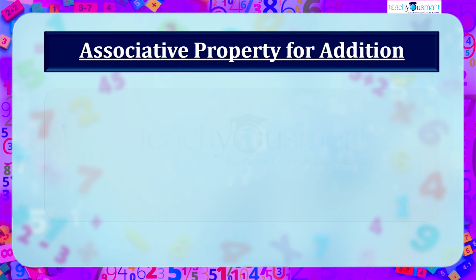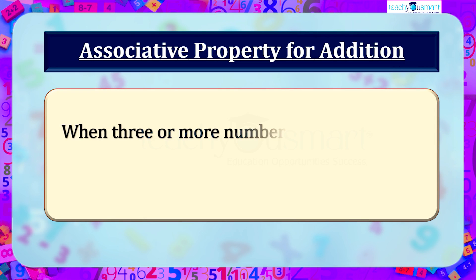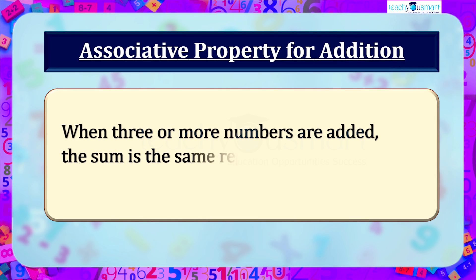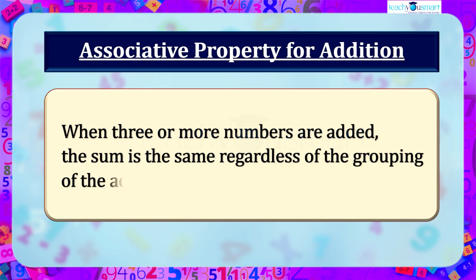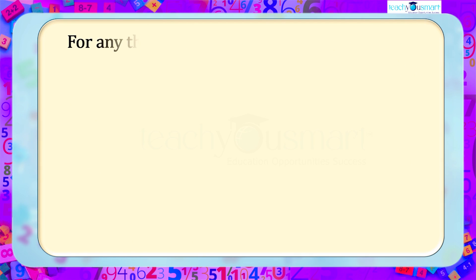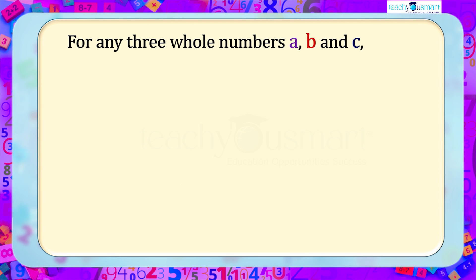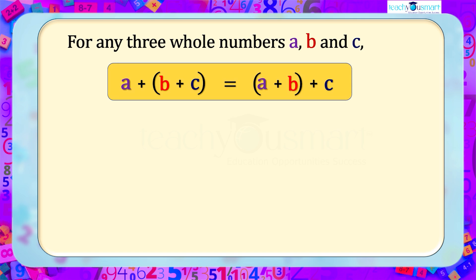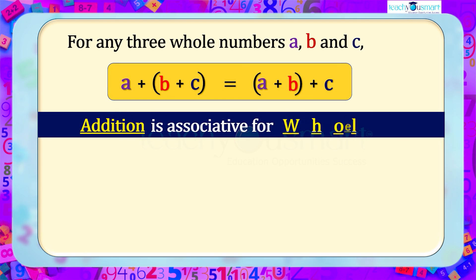The associative property for addition says that when three or more numbers are added, the sum is the same regardless of the grouping of the addends. In general, for any three whole numbers A, B, and C: (A + B) + C = A + (B + C). That is, addition is associative for whole numbers.